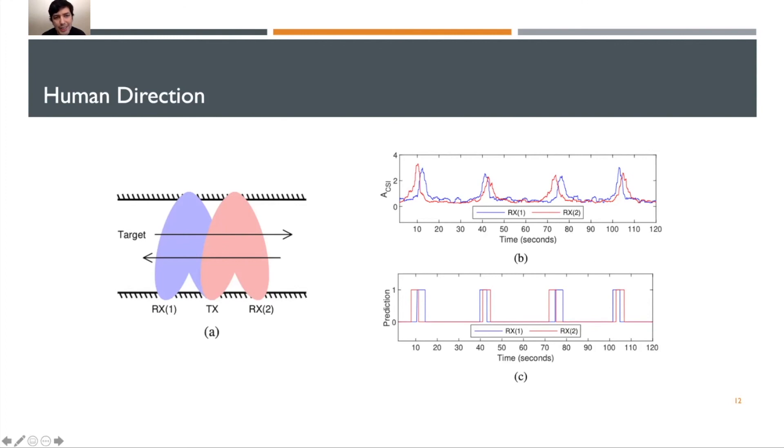If we look at this top right figure, we can see the first peak shows up for red, RX2, which is closely followed by a peak in RX1. And that indicates to us that the target started on the right and moved from right to left because it affected RX2 first and then RX1. Similarly, if we continue to look, we can see the peak starts with blue, then red, red then blue, blue then red. And that indicates the target moved back and forth, back and forth.